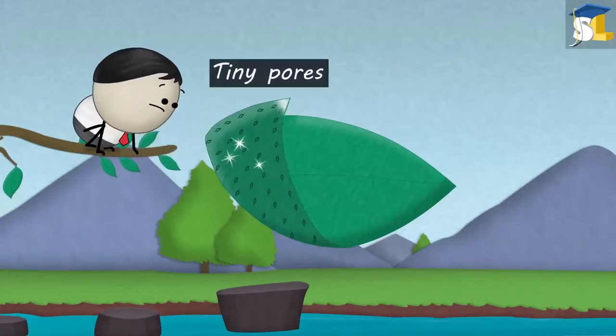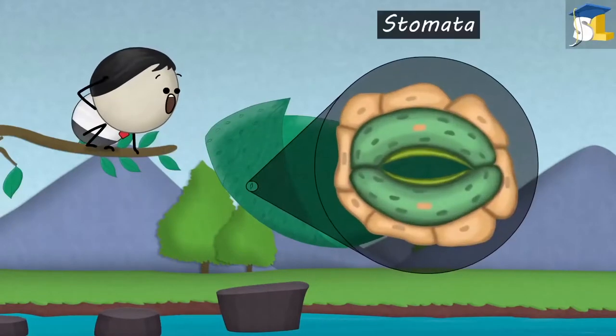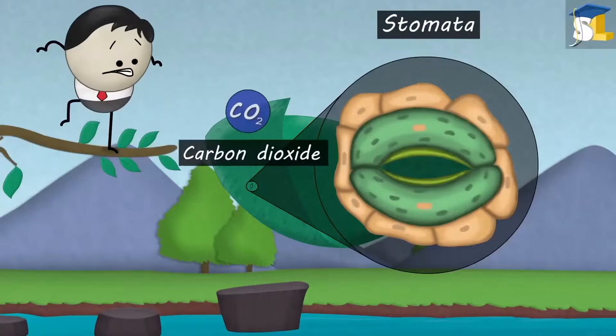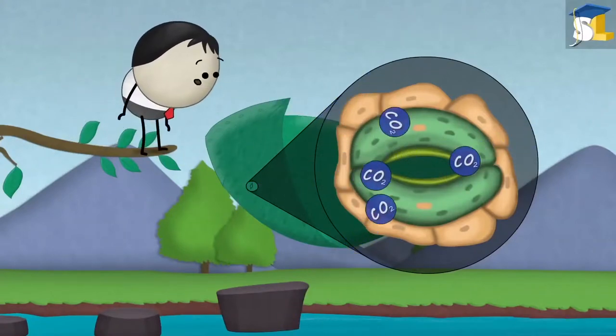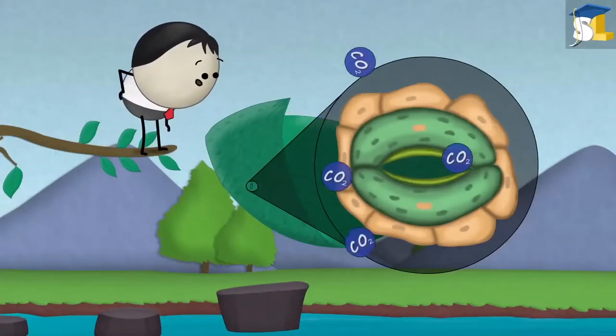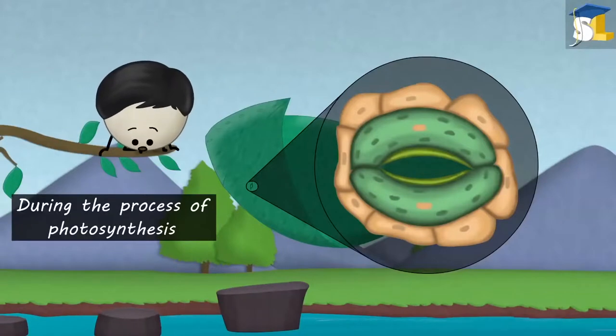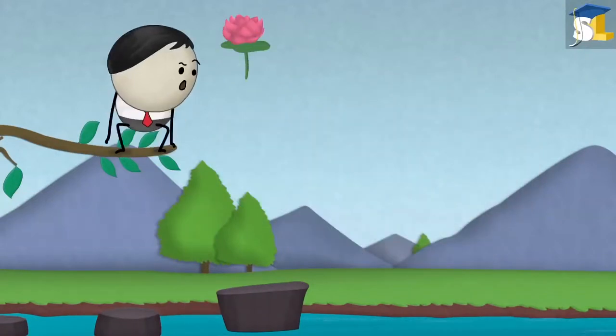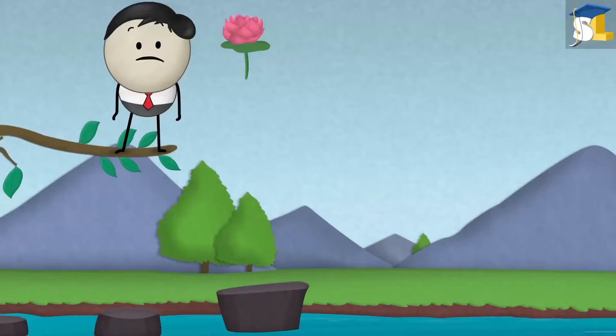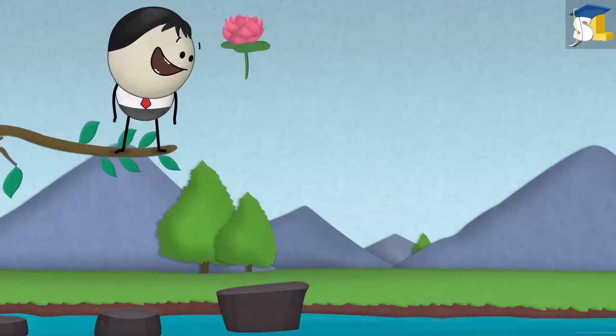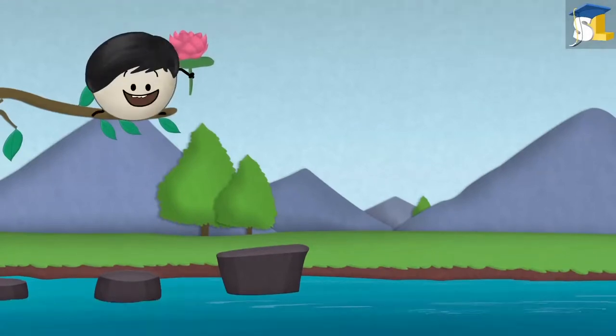On the lower side of the leaves, tiny pores called stomata are present. They help the leaves to take in carbon dioxide from the air during the process of photosynthesis. So, shall I place the plant upside down? No.